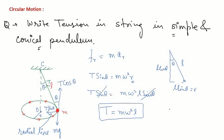There is a second equation from the vertical direction for the horizontal circle: T cosθ = mg. So you can find T in two ways — if you know θ, use T cosθ = mg; if you know ω, use T = m ω² l. These are the two equations for the conical pendulum.